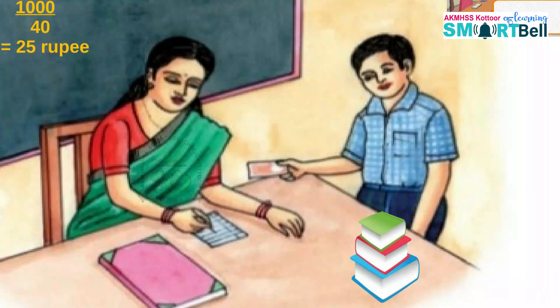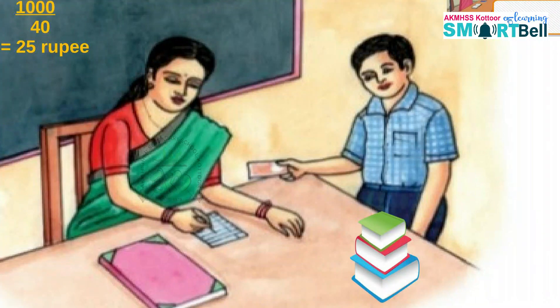That means 1,000 divided by 40, which is equal to 25. That means if every child in 6A gives 25 rupees, it will total 1,000. Their problem is solved.